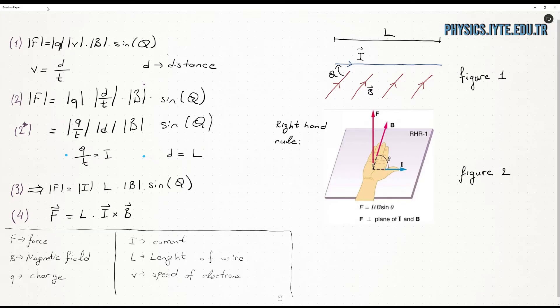The magnitude of F equals the product of I, L, B, and sine theta. In vector form, force is equal to L times the cross product of I and B. To define the direction of force, the right-hand rule is a useful tool. When our thumb points to the direction of current and our forefingers show the direction of magnetic field, our palm will show us the direction of force, which is perpendicular to the plane of I and B.